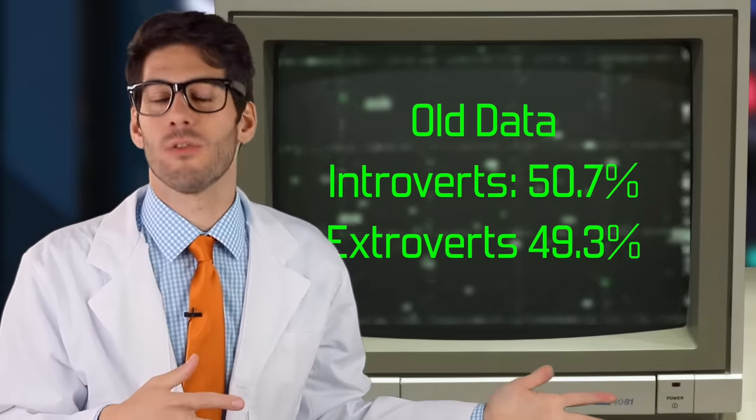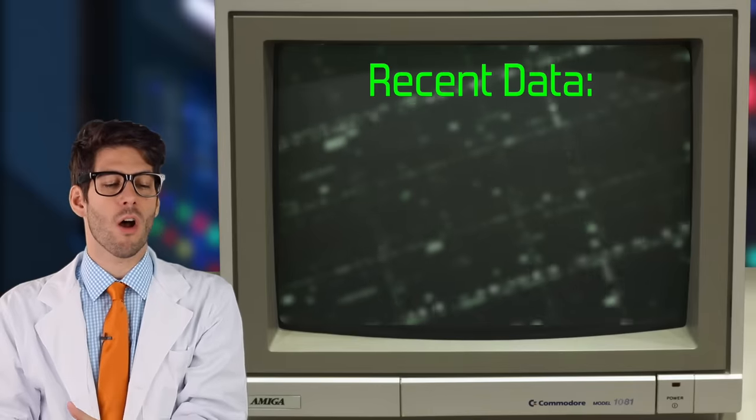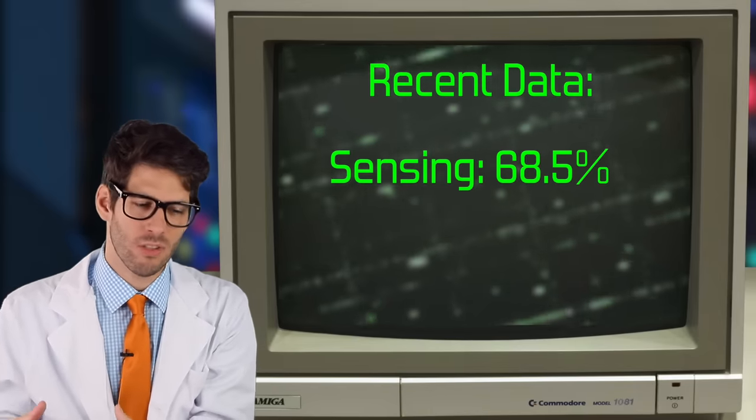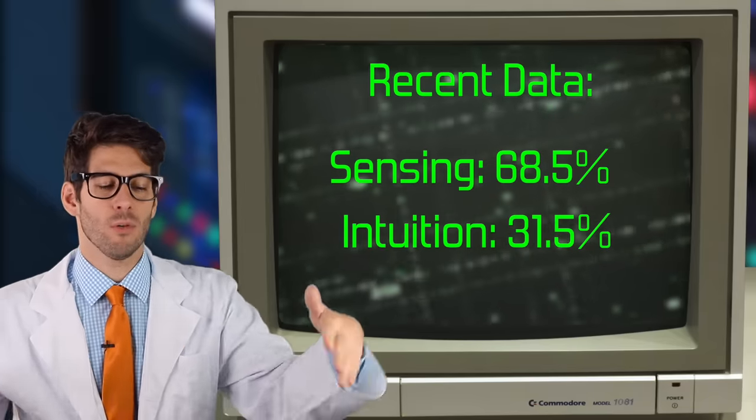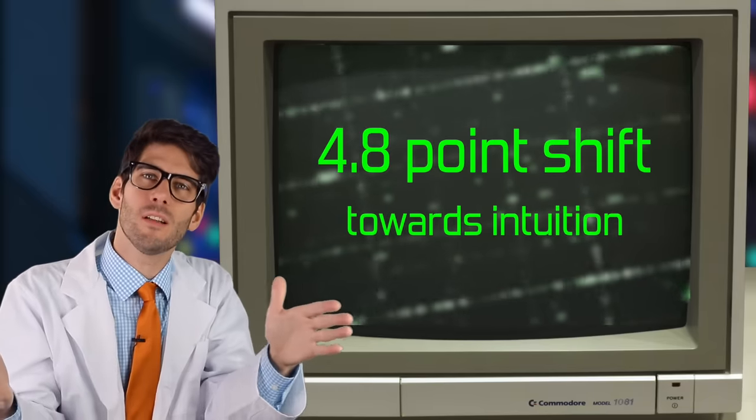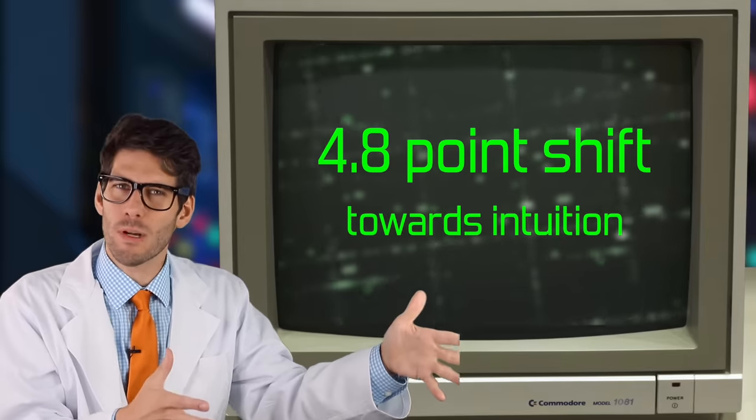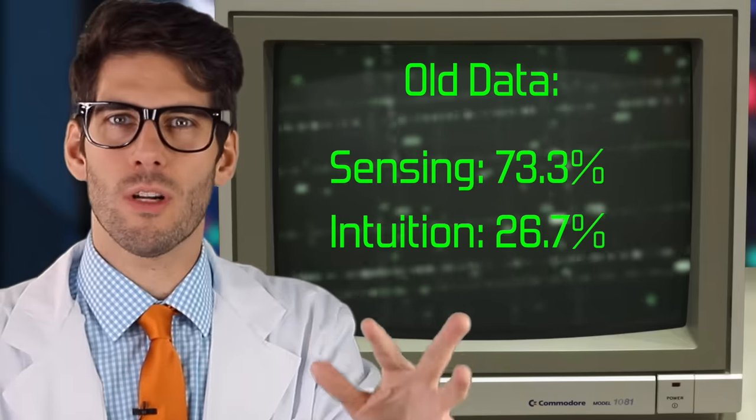Next up is sensing versus intuition, S versus N. And of course, just a quick explanation, sensing and intuition are how we take in information. Sensing is looking at the facts and what is observable and provable. Intuition is looking at the broader concepts and the overview of generally what's going on, the big picture. This one has changed, but maybe not quite as dramatically. And the new numbers are 68.5% prefer sensing and 31.5% prefer intuition. So we're shifting a little bit more towards more people preferring intuition, but it's still clearly majority sensing.